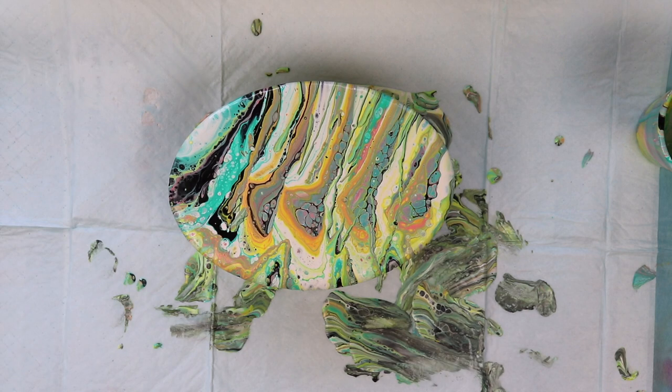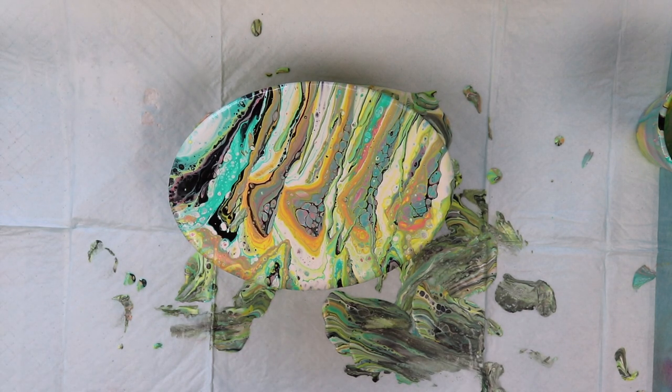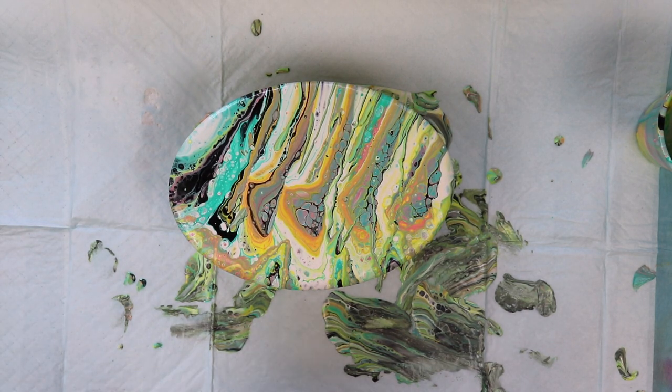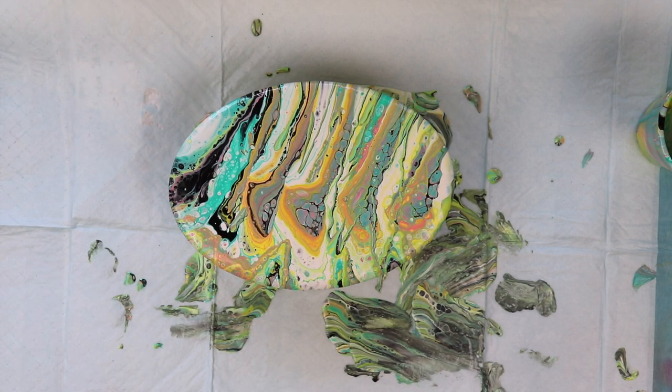The reason we use a torch there's two reasons. To bring up cells that could be underneath the paint and also to pop any bubbles in case you were wondering.